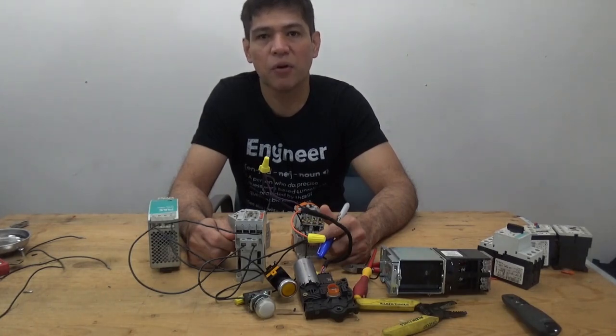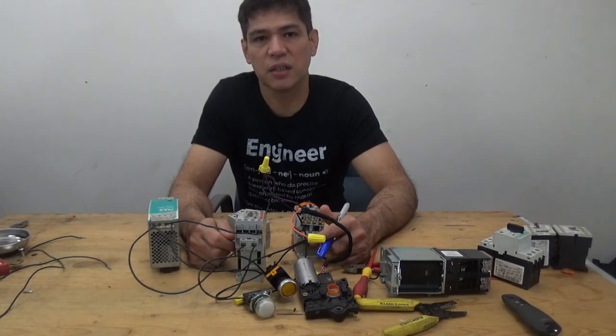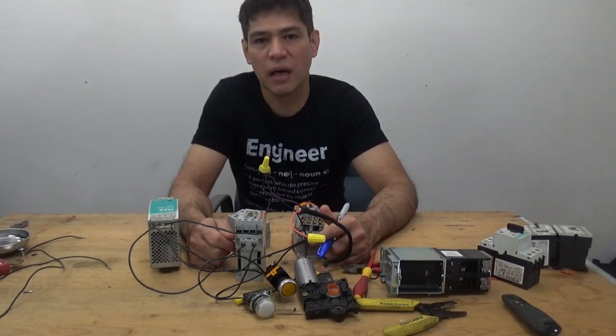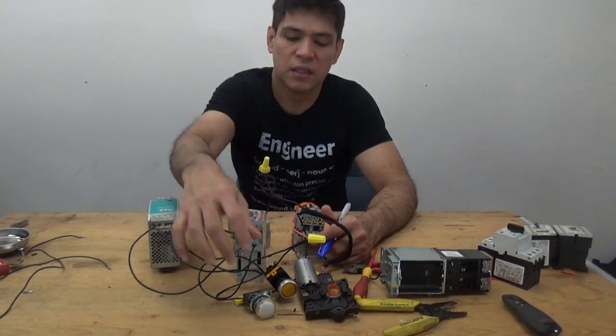Basically, a motor starter is an electromagnetically operated device that starts and stops a motor load. It consists of an electrical contactor and overload relay which provides short circuit and overload protection. Now we're going to our computer to discuss more detail, then we'll do practical exercises.